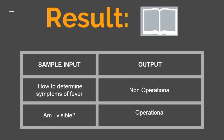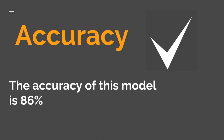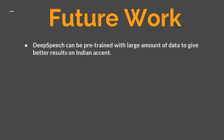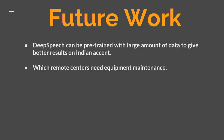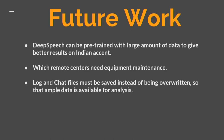The results show that a sentence like 'how to determine symptoms of fever' is classified as non-operational, and 'am I visible' is classified as operational. The model achieves 86% accuracy. For future work: with more Indian accent data, Deep Speech can give better results. By knowing how many operational problems a center faces, we can deploy more equipment maintenance to that center. Also, AVU chat log files were previously being overwritten rather than saved, so saving them will give us more data for better analysis.